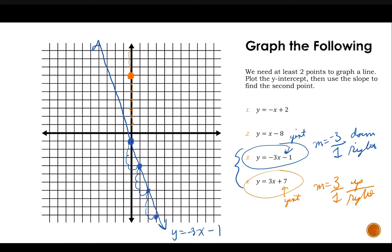So I'm going to go up 3, right 1 to find that second point. And then I can draw my line through those two points. So this is the line y equals 3x plus 7.